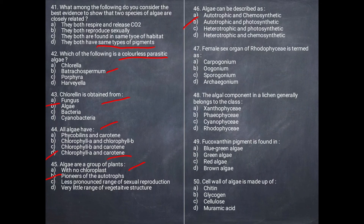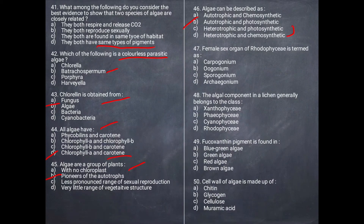Why is algae not chemosynthetic? Because it does not work with chemical help. It is not hydrotrophic either. So the correct answer is B.